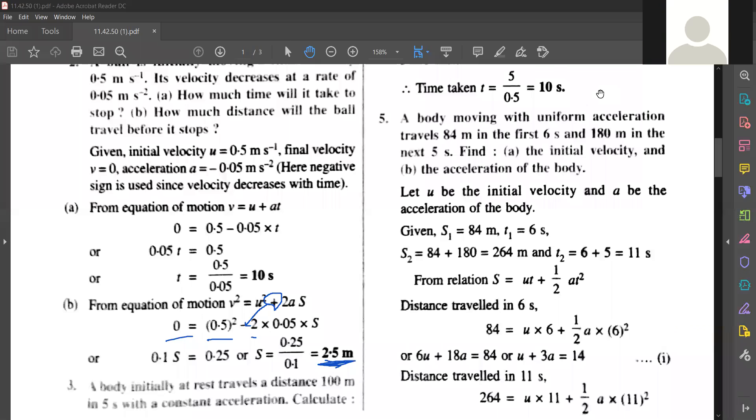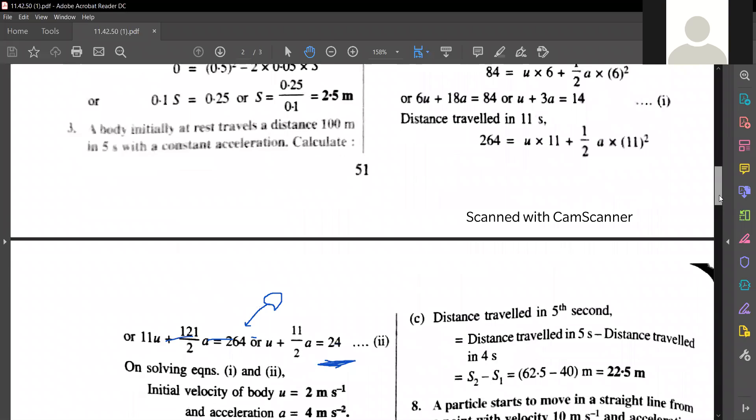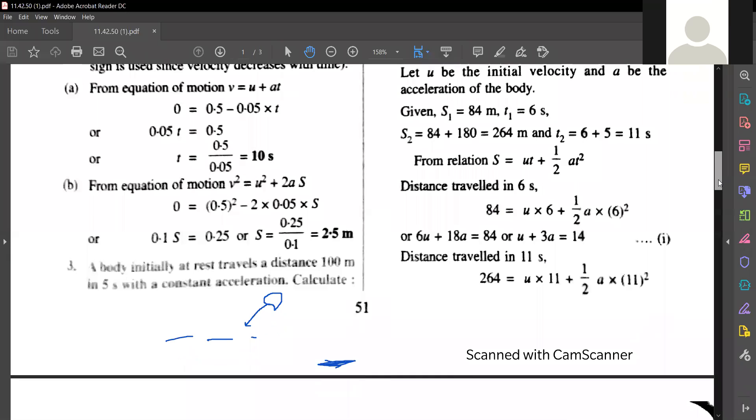Right. Let's take the third question, please. All read the third question in your book and check. Do you have same question or different question? A body initially at rest travels a distance of 100 meters in 5 seconds with a constant acceleration. Calculate.